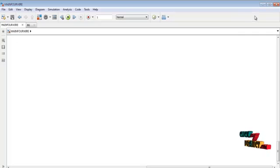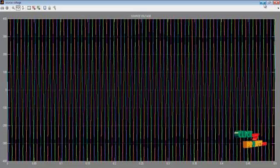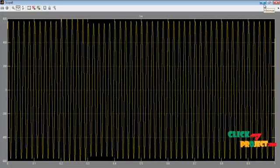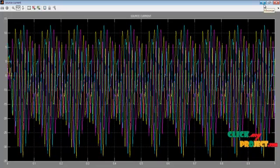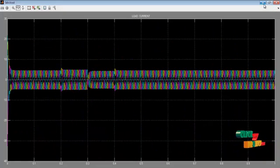After when the simulation is ended, double click the scope, the output waveform will be shown. So the first one is the source voltage waveform. And the next one is the source current waveform. And this is the corresponding each phase voltage waveform. And this is the source current waveform. And this is the load current waveform.